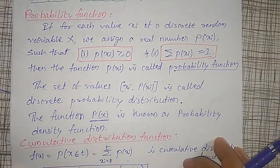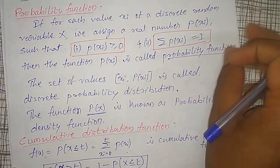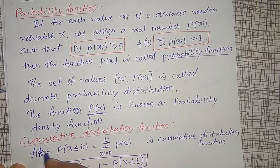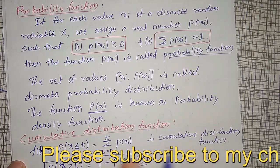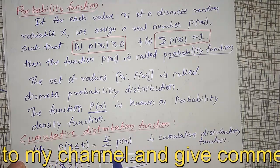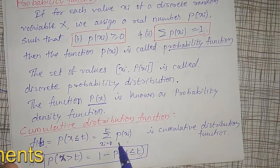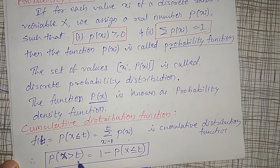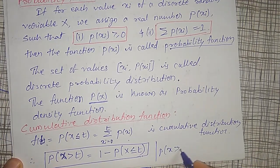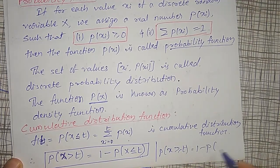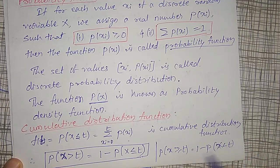The cumulative distribution function F(t) is nothing but the probability of X less than or equal to t. Adding up all the probability values from x_i = 0 up to t gives the cumulative distribution function. The probability of X greater than or equal to t is given by 1 minus the probability of X less than or equal to t, or equivalently 1 minus the probability of X less than t.